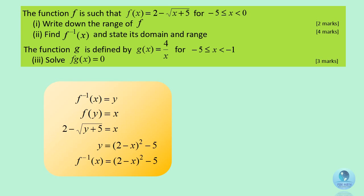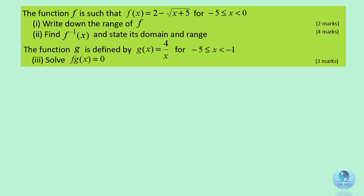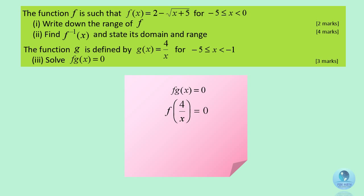This is how you find the inverse function of f. When the composite function f(g(x)) equals 0, substitute g(x) equals 4 over x into function f, solve the equation, and you get x equals negative 4.